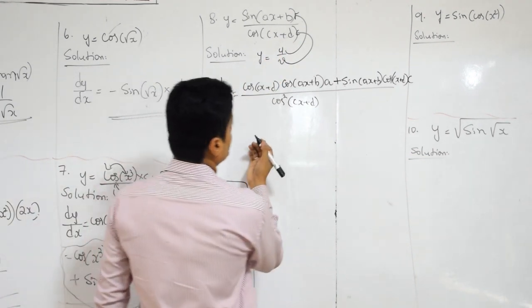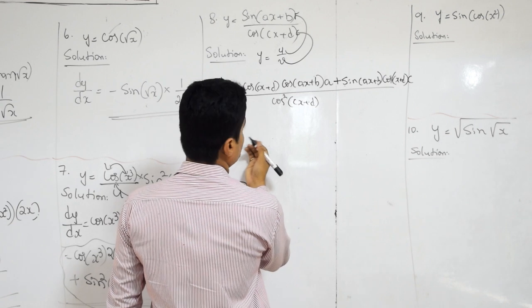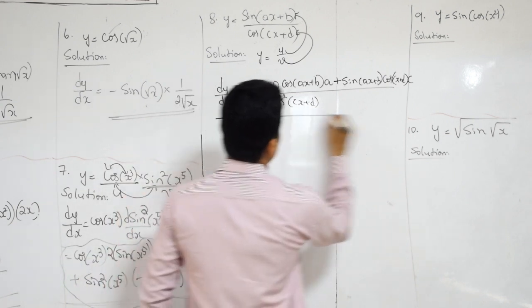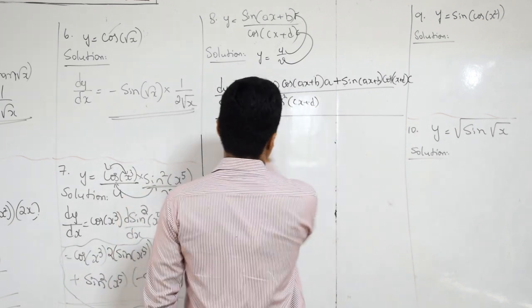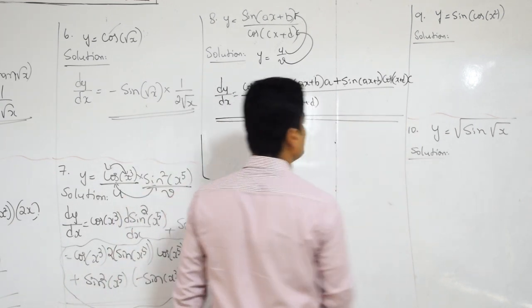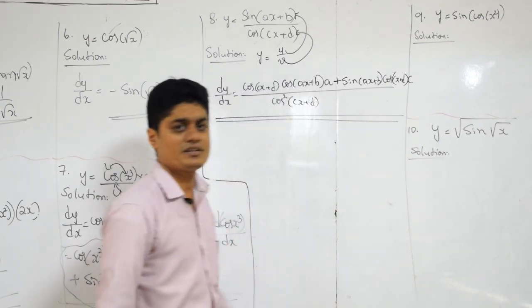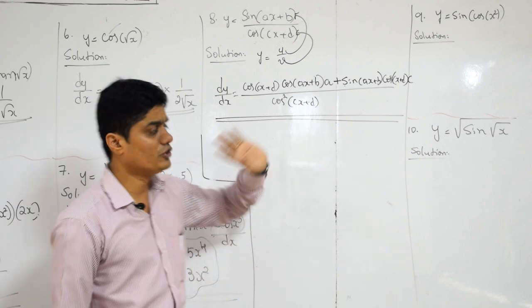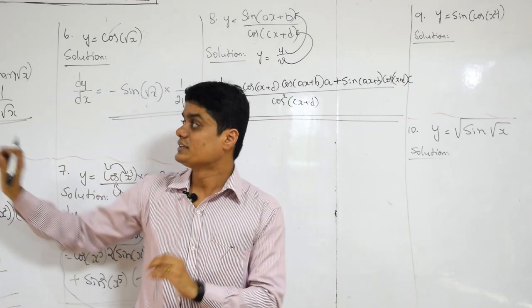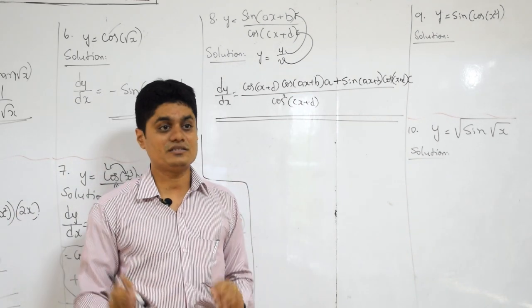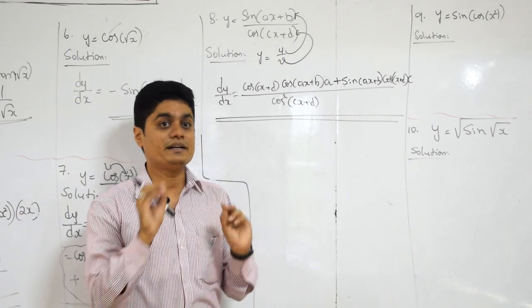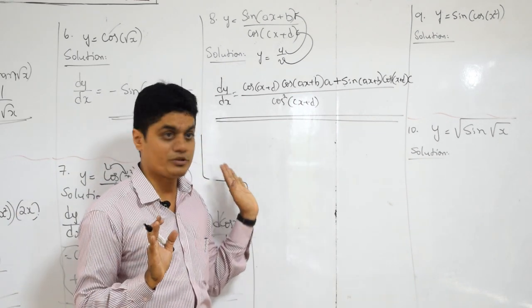So here, simplification may not be possible — just keep it as it is. This is enough. Don't worry about simplification, because nowhere is it asked to simplify — it just asks you to find the derivative. I hope you understood.